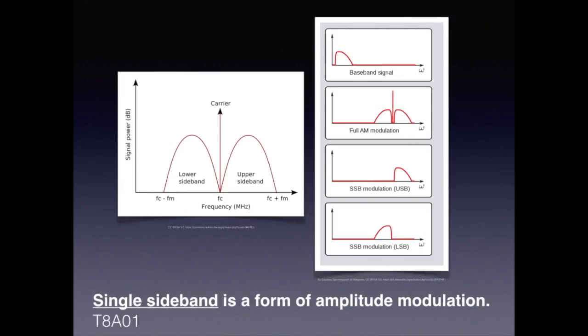Simply put, the more bandwidth used, the more power is needed to transmit the information. Full AM uses both upper and lower sidebands and occupies approximately six kilohertz of bandwidth. Single sideband, on the other hand, uses only three kilohertz. Accordingly, it will travel much further given the same power. For the exam, know that single sideband is a form of amplitude modulation.